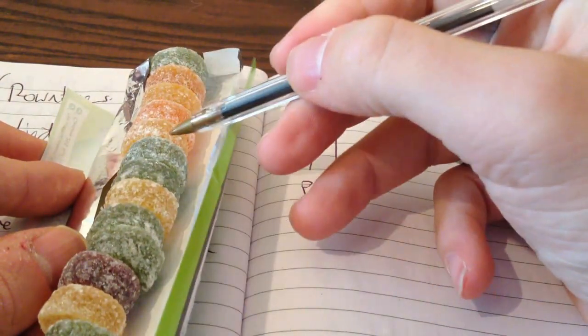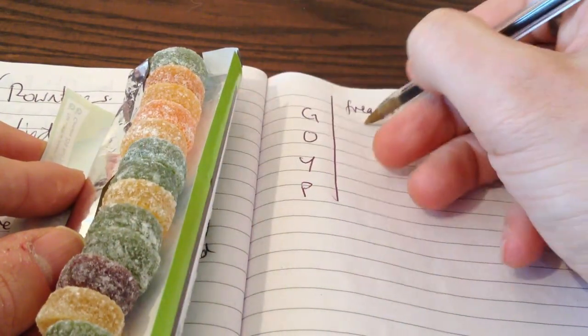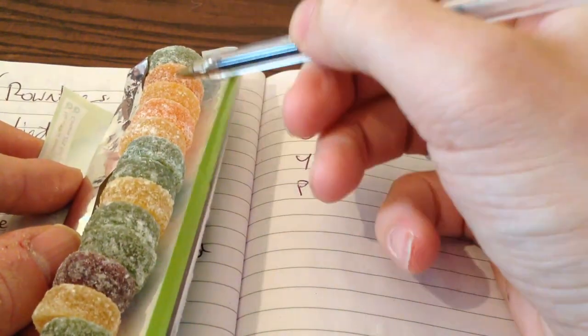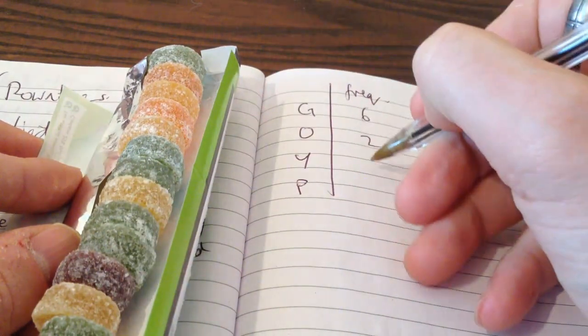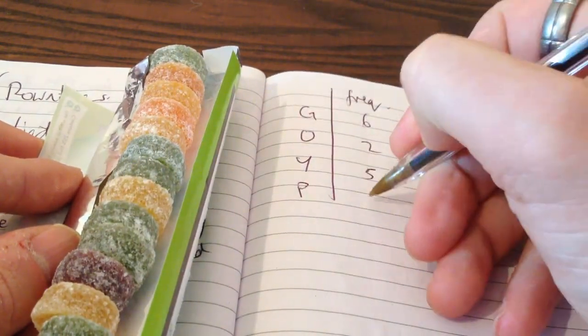So how many green ones? One, two, three, four, five, six. Orange is just the two. Yellow is one, two, three, four, five. And purple is one, two, three, four, five.